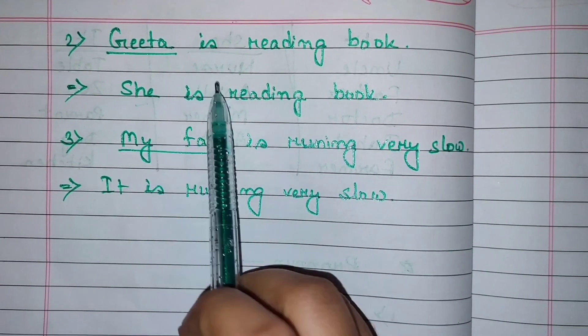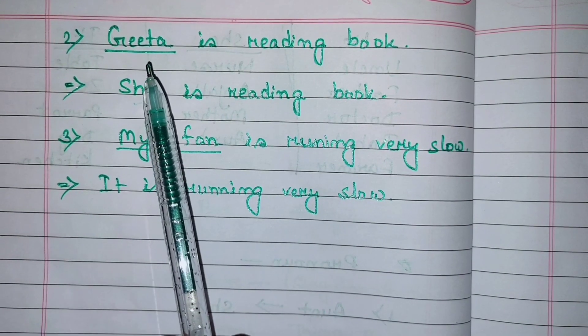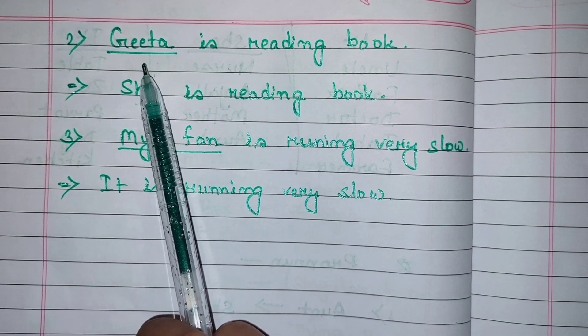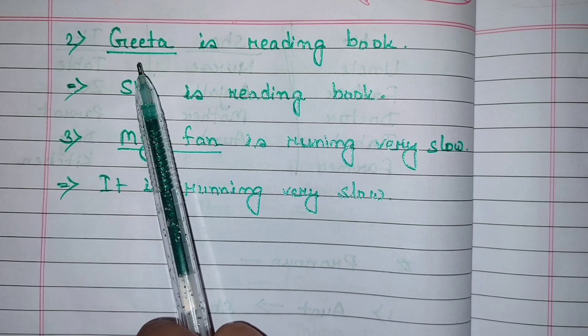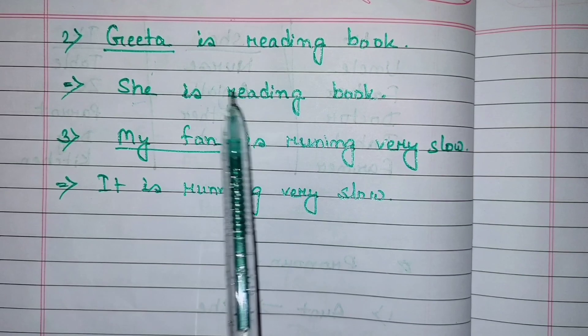Next example: Gita is reading book. Gita is underlined. Gita is a female figure. That's why we use she pronoun in it. She is reading book.